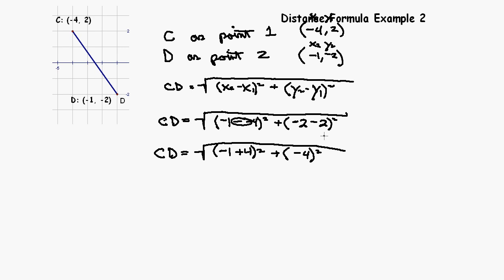Continuing on, the distance from C to D is the square root. Negative 1 plus 4 is 3, so we have 3 squared plus negative 4 squared.